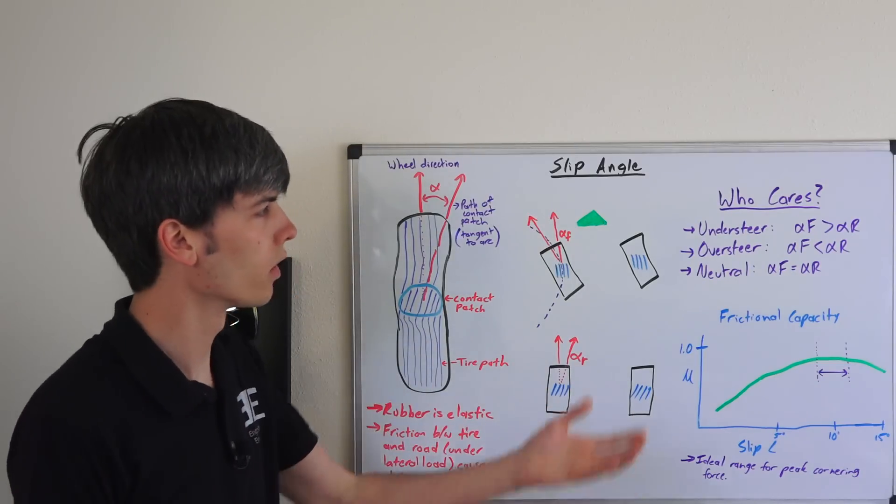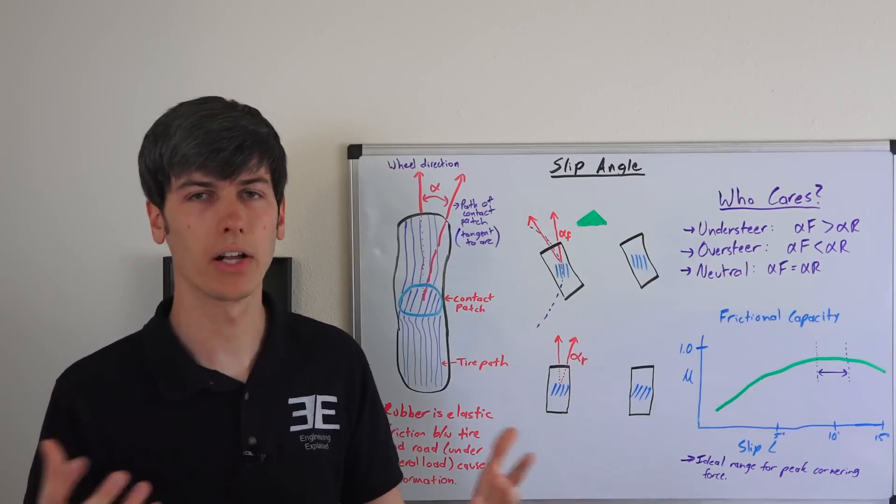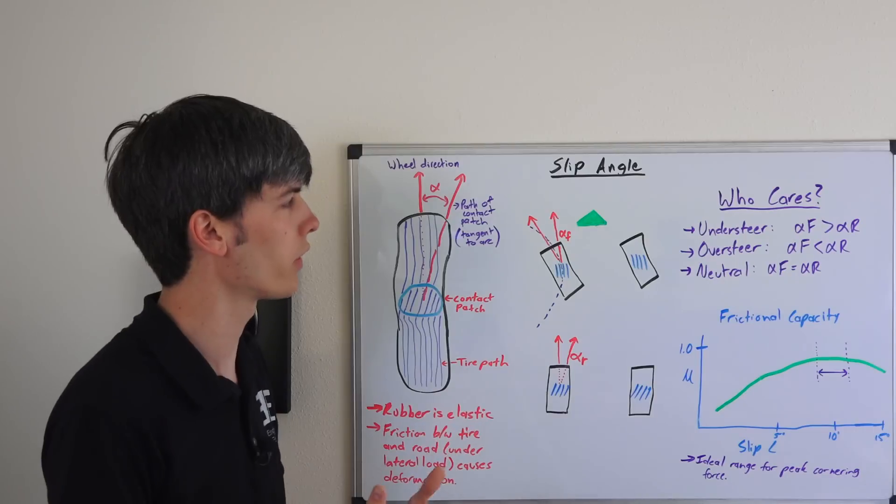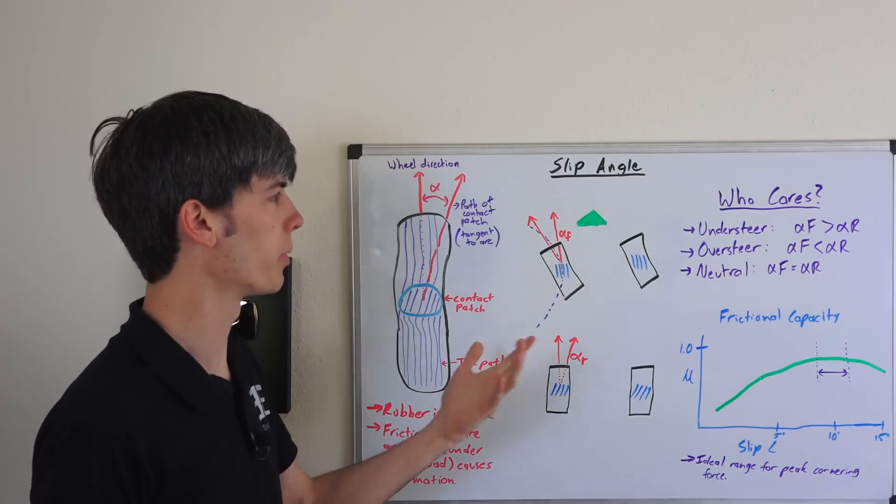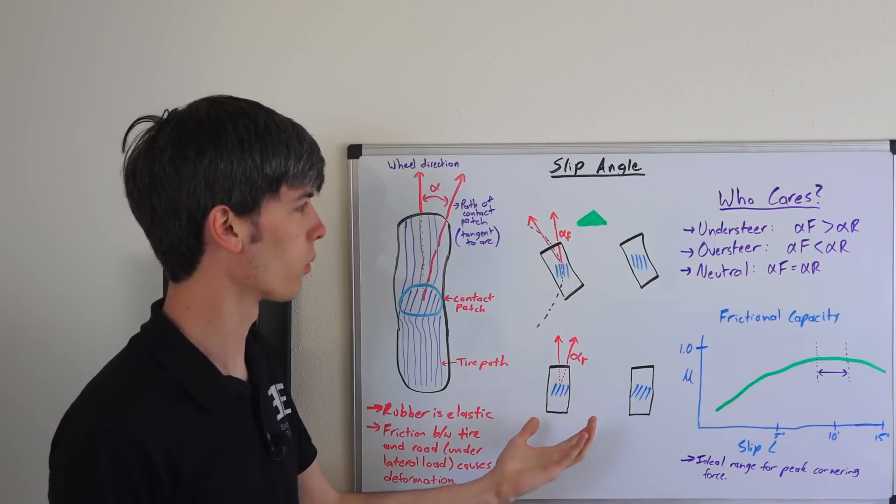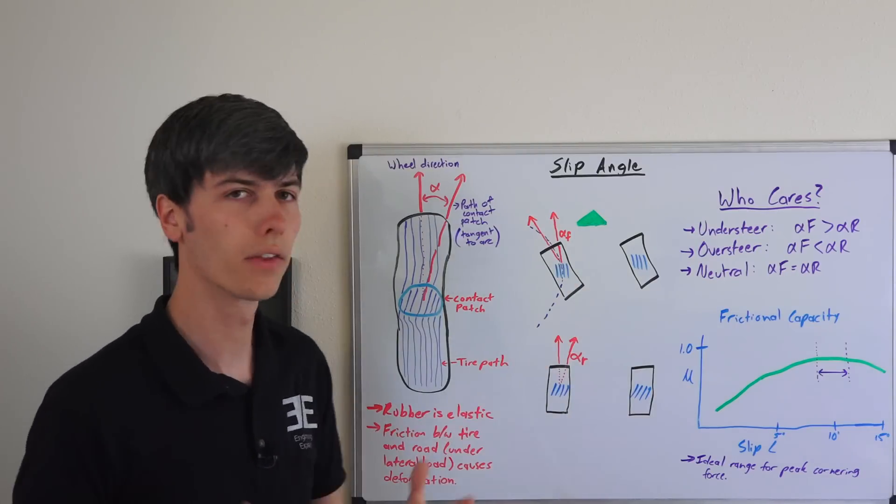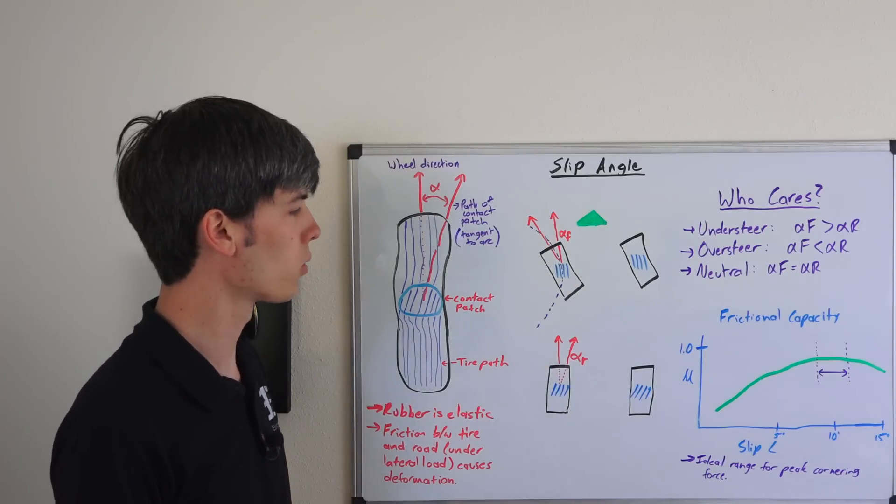Okay, so who cares? Why does any of this matter? Well, it actually explains a lot about understeer and oversteer and it's kind of how you define these terms. A car that has a larger front slip angle than rear slip angle will be understeering. Vice-versa, if the rear slip angle is larger than the front the car is oversteering. And then if they're equal the car will handle neutrally and go about the corner without understeer or oversteer.